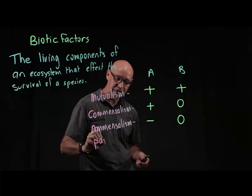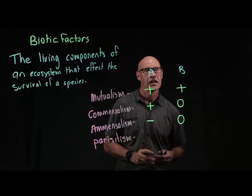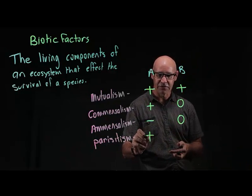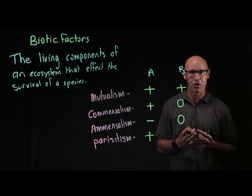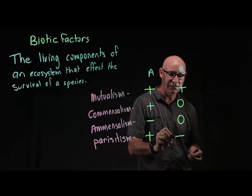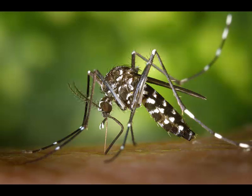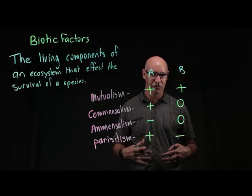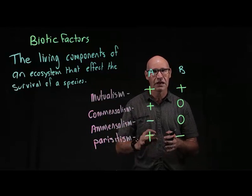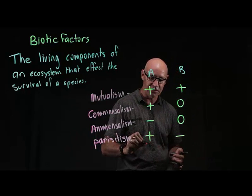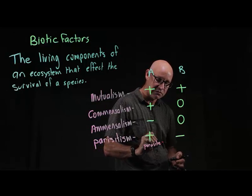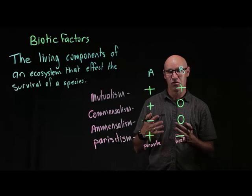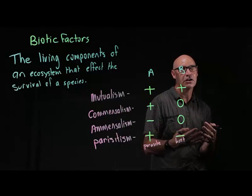Another one is parasitism. A parasite is an organism that lives on or in a host. The parasite benefits by having a place to stay and getting nutrients from the host, while the host is negatively affected. Examples include a mosquito on a human, a tick on a dog, or an internal parasite like a worm inside the guts of an animal. So the parasite is benefited and the host is negatively affected. Interestingly, there are also parasitic plants that feed off host plants.